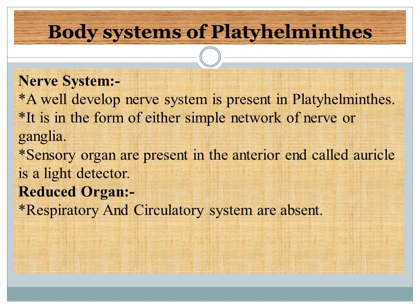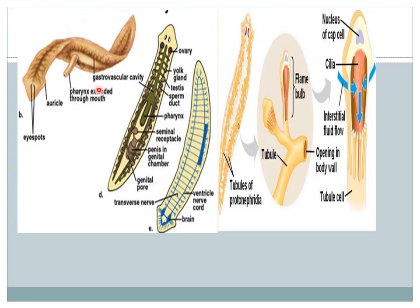Respiratory and circulatory systems are absent in Platyhelminthes. This figure shows students the systems of Planaria. The eye spot helps with sight. The auricle or sense organ helps with light detection. The pharynx extending through the mouth helps in digestion. The gastrovascular cavity also helps in digestion. The ovaries are the female reproductive parts and the testes are the male reproductive parts. The transverse nerves, brain, ventral nerve cord, protonephridia tubules, and flame cells — which help in excretion — are also shown.